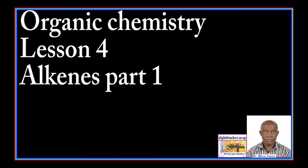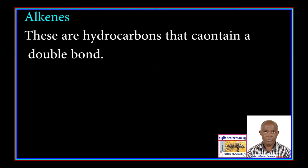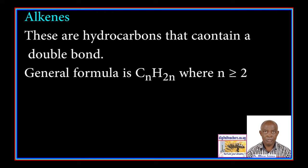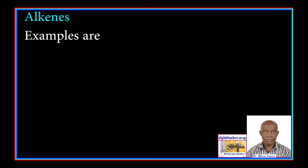Today we are going to study Organic Chemistry, Lesson 4, Alkenes, Part 1. These are hydrocarbons that contain a double bond. The general formula of alkenes is CnH2n, where n is greater than or equal to 2.